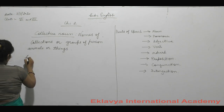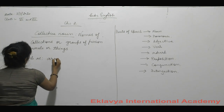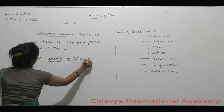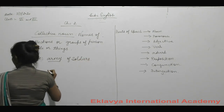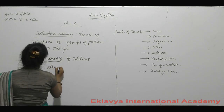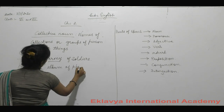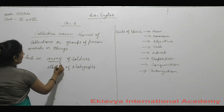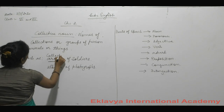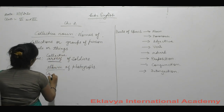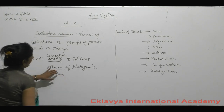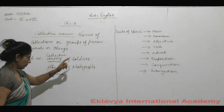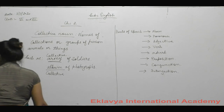Examples of collective noun: army — an army of soldiers. Album — an album of photographs. Army is a collective noun here; album is also a collective noun, because it tells us the collection of photographs, and army tells us a group of soldiers.